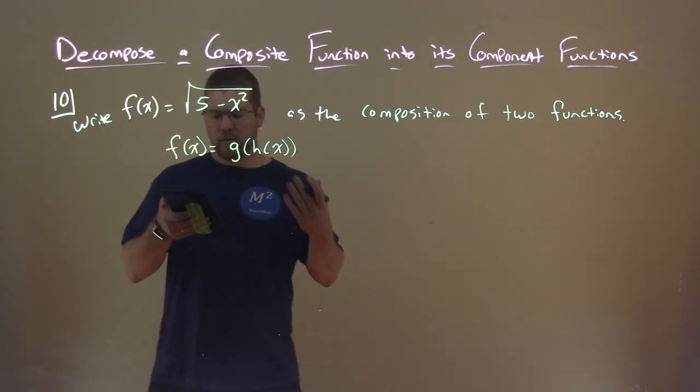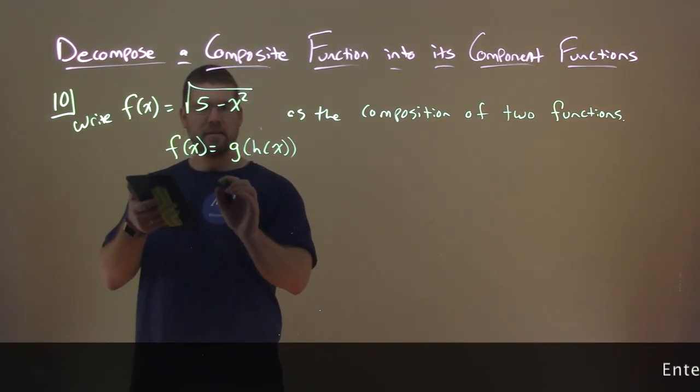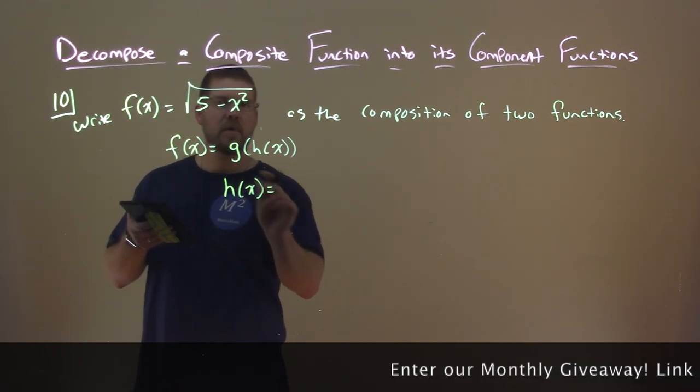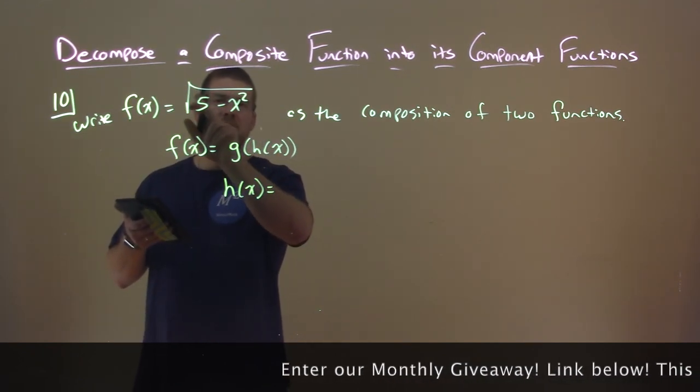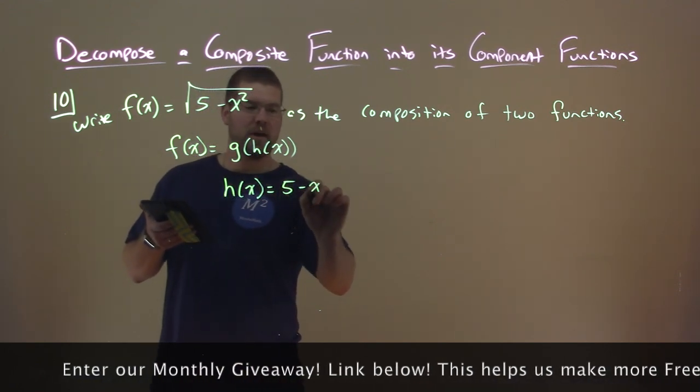So there's a few ways we can go about it. Let's say h of x is on the inside. I can look on the inside here and say h of x is going to be this inside part, which is just 5 minus x squared.